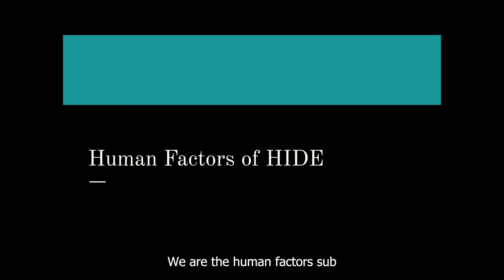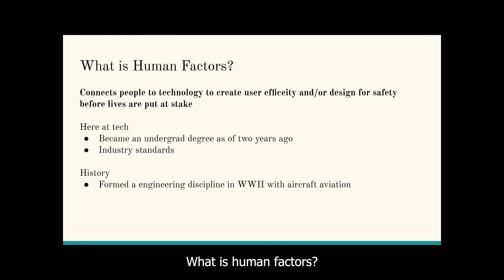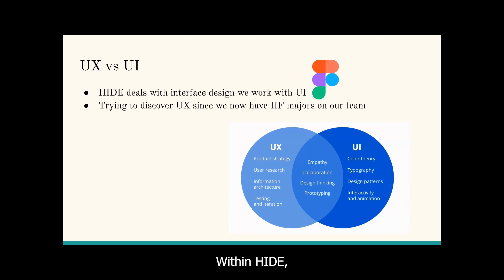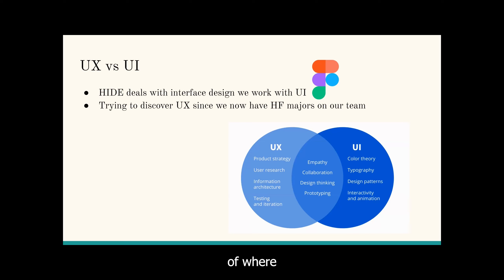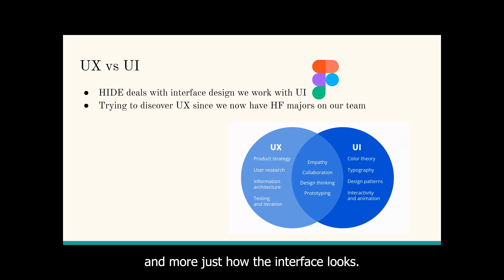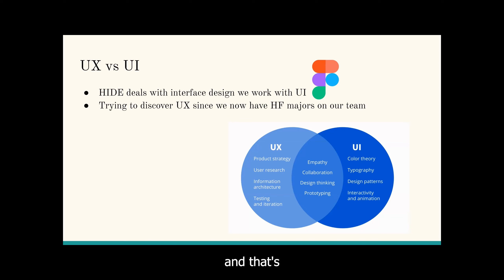We are the Human Factors sub-team of the HIDE Enterprise. Human Factors essentially connects people to technology to create user efficiency and better design for safety. It has been a new major for roughly two years in the undergrad program here at Tech. Within HIDE, we work with UX and UI design. UX, or user experience, covers things like where people put their hands on a keyboard or where their eyes dilate during a task. UI covers color theory, design patterns, and how the interface looks. Combining those two is where we do task analysis and psychology comes in.